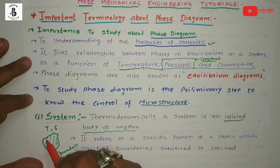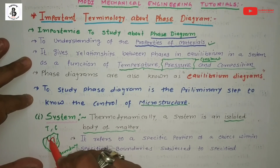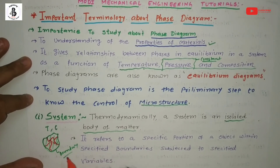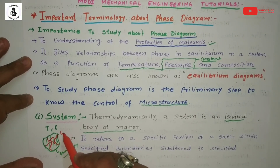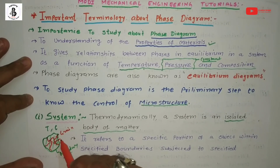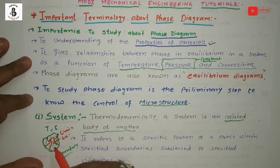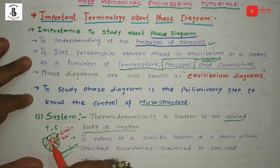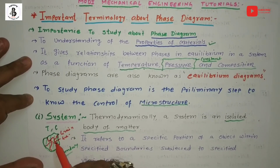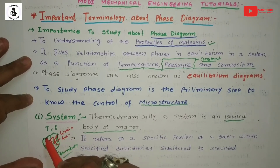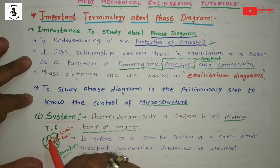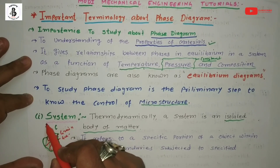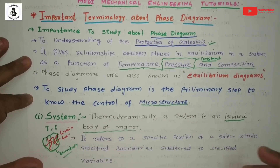A system has a different kind of structure. It contains different grains, and all grains are separated by grain boundaries. One grain is completely different from another grain of the same system. All the grains get together, separated by grain boundaries, to form the system. In general, this is called a system — or simply an isolated body of matter.